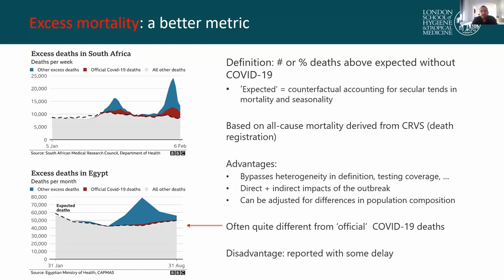In many settings, our estimates of excess mortality are quite different from the official COVID-19 death counts, as illustrated clearly for South Africa and Egypt, where excess mortality has been quite sizable — much, much higher than what we would see in the headline statistics. A disadvantage of these types of estimates is that they are reported with some delay, because it takes time for death reports to be absorbed by CRVS systems and then made available for analysis and publication.